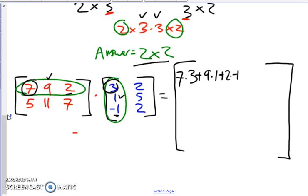So if we continue on with this, you take the first row times the second column to get the top right entry. So again, you match up the first one with the first one. So you do seven times two plus nine times five plus two times two.